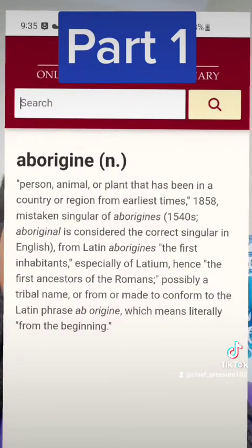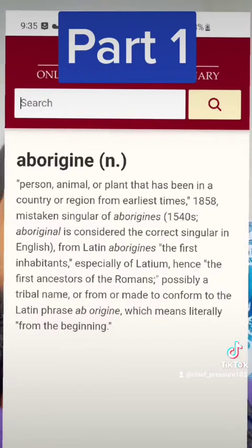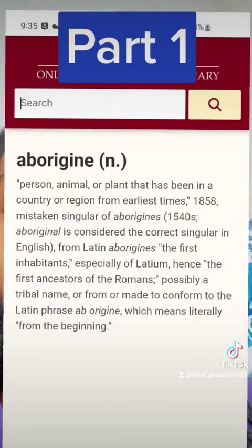'Aborigine' — person, animal, or plant that has been in a country or region from earliest times. 1858 — mistaken singular of 'aborigines'; 'aboriginal' is considered the correct singular in English. From Latin 'aborigine': the first inhabitants, especially of Latinum, hence the first ancestors of Romans — possibly a tribal name, or from a phrase made to conform to the Latin phrase 'ab origini,' which means literally 'from the beginning.'